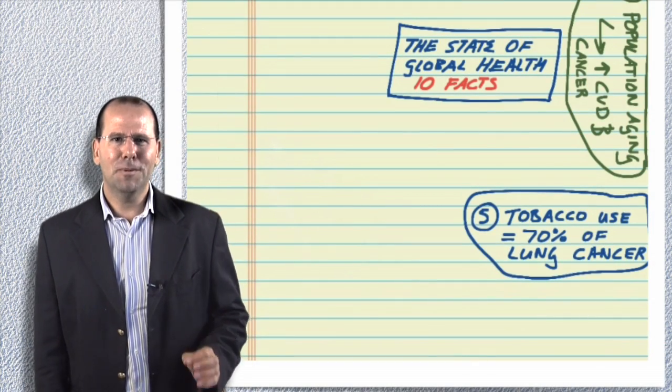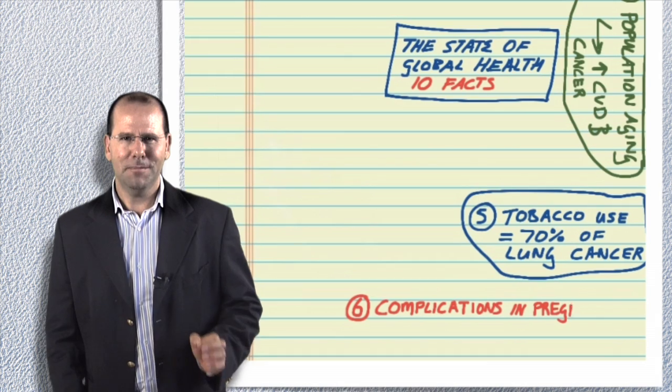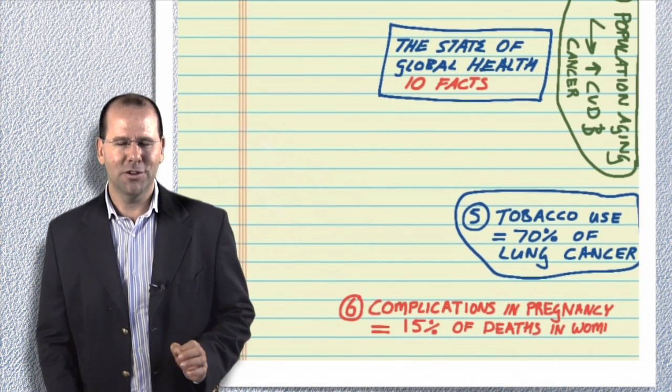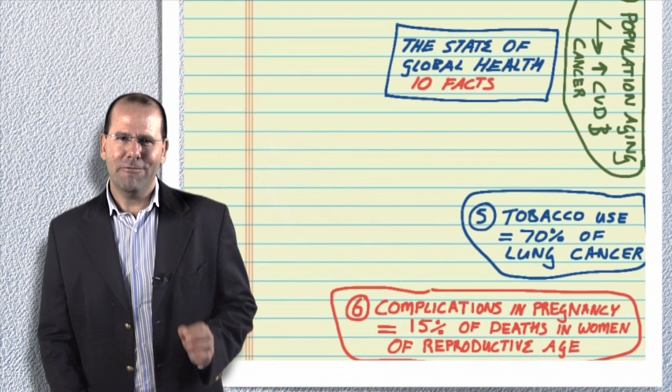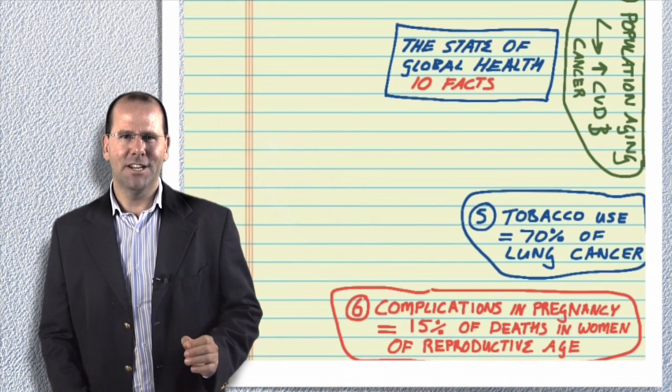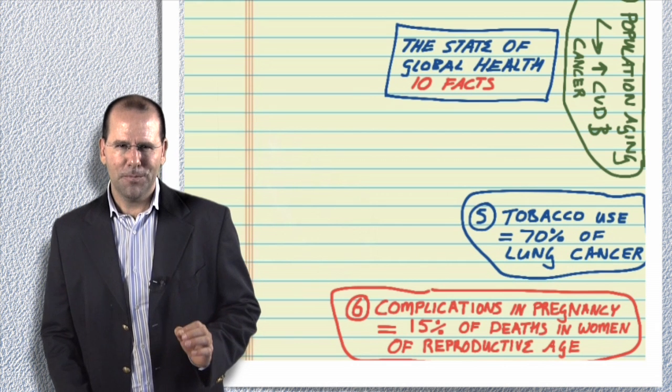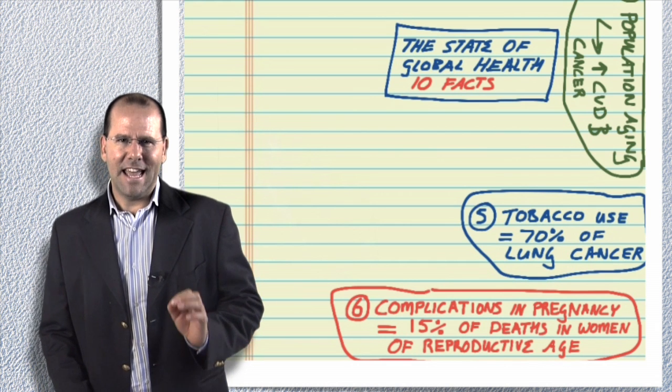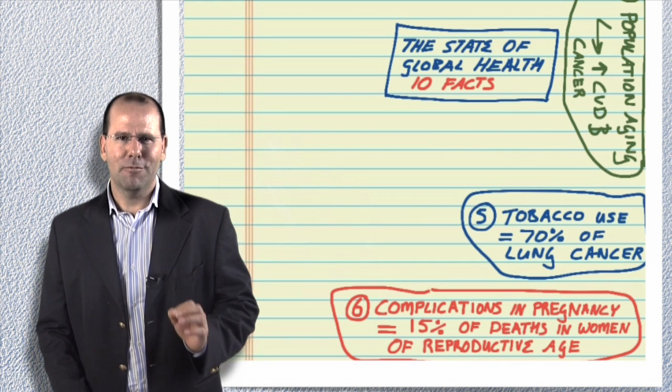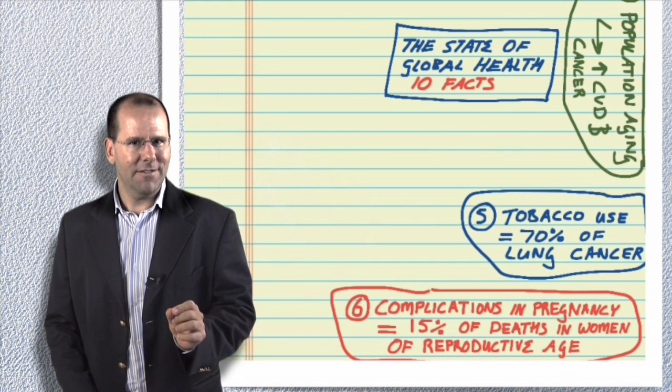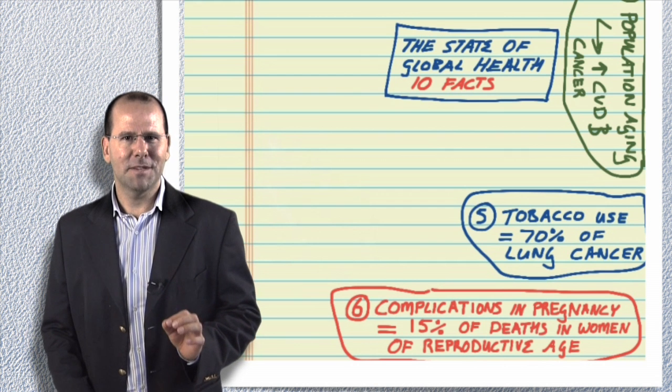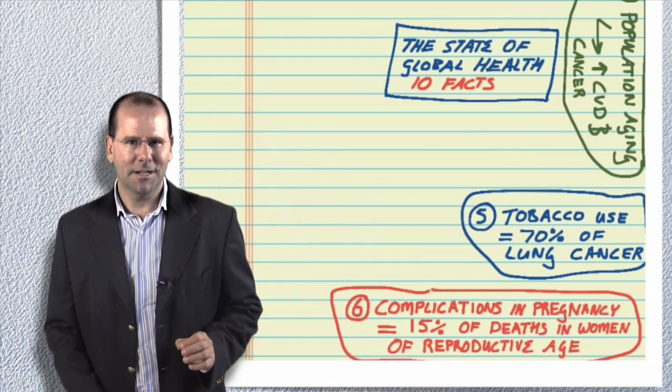Fact number six: complications of pregnancy account for almost 15 percent of deaths in women of reproductive age worldwide. Every day about 800 women die due to complications of pregnancy and childbirth. The risk of a woman in a developing country dying from a pregnancy-related cause during her lifetime is about 25 times higher compared to a woman living in a developed country.